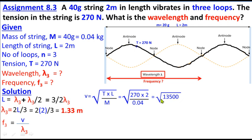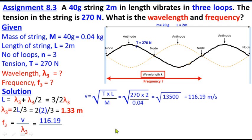Solving on the calculator: V = √(270 × 2 / 0.04) ≈ 116.19 meters per second. Substituting into the frequency formula: f = 116.19 / 1.33 ≈ 87.3 Hz. Both answers — wavelength 1.33 m and frequency 87.3 Hz — match the answer book.